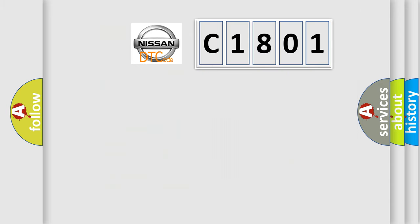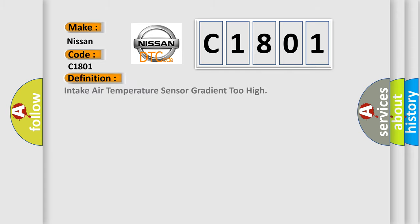So, what does the diagnostic trouble code C1801 interpret specifically for Nissan car manufacturers? The basic definition is: Intake air temperature sensor gradient too high.